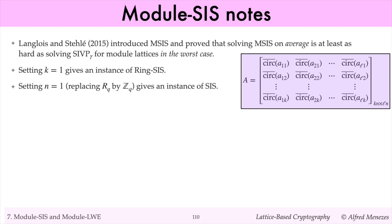Notice also that SIS is a special case of module SIS with n equals 1. When n equals 1, the ring RQ is equal to the integers modulo q, and each anti-circulant matrix in A is an integer modulo q. So module SIS interpolates between SIS and ring SIS.